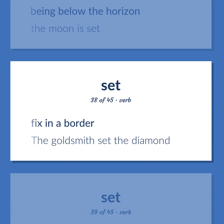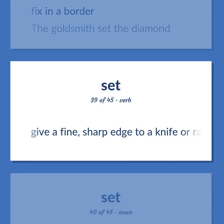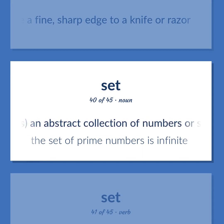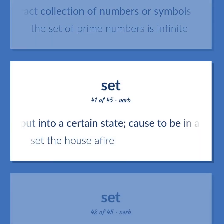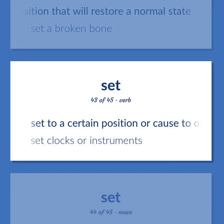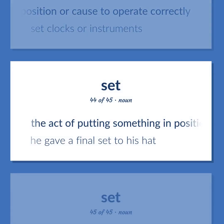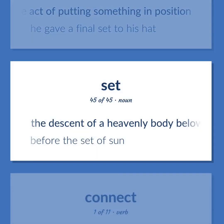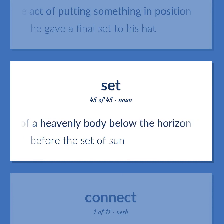Set: Fix in a border — 'The goldsmith set the diamond.' Give a fine, sharp edge to a knife or razor. Mathematics: An abstract collection of numbers or symbols — 'The set of prime numbers is infinite.' Put into a certain state; cause to be in a certain state — 'Set the house afire.' Put into a position that will restore a normal state — 'Set a broken bone.' Set to a certain position or cause to operate correctly — 'Set clocks or instruments.' The act of putting something in position — 'He gave a final set to his hat.' The descent of a heavenly body below the horizon — 'Before the set of sun.'